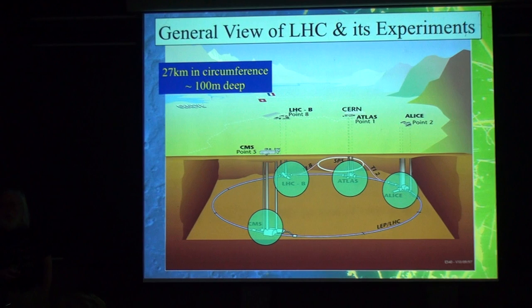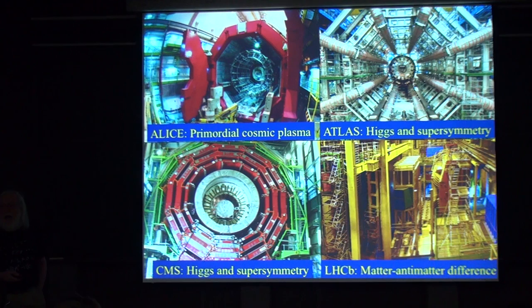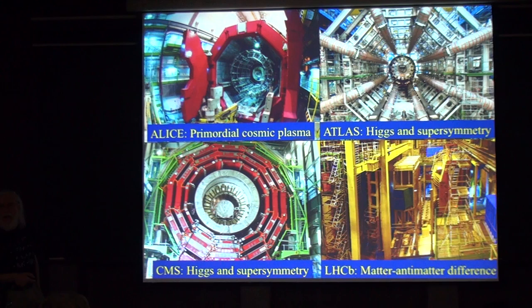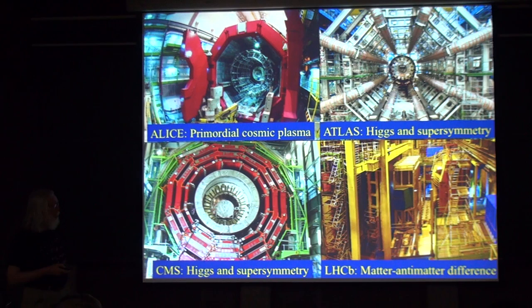There are four places around the ring where there are big experiments, and Taiwan is involved in two of those — the Atlas and CMS experiments that actually discovered the Higgs boson last year. Atlas and CMS are looking for dark matter as well as the Higgs boson. LHCb is dedicated to matter-antimatter studies, and Alice is colliding primarily heavy nuclei to look for the plasma that filled the universe when it was a fraction of a second old.